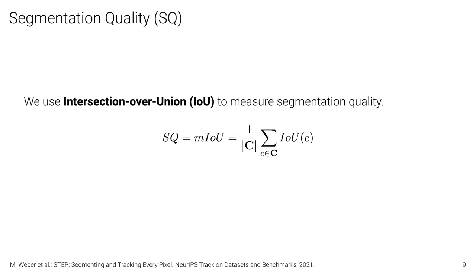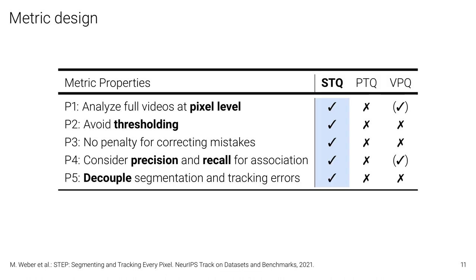The segmentation quality is much simpler. We just resort to the well-established intersection over union to measure the segmentation quality. In the paper, we do a thorough analysis of all the metrics, and we are able to show that only the proposed STQ metric is able to fulfill all the desired properties.